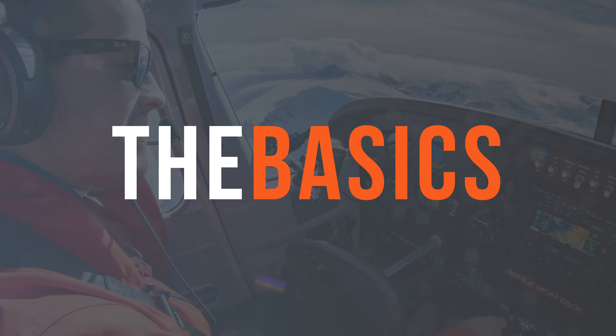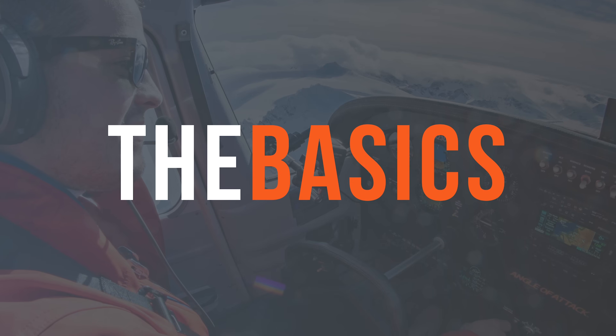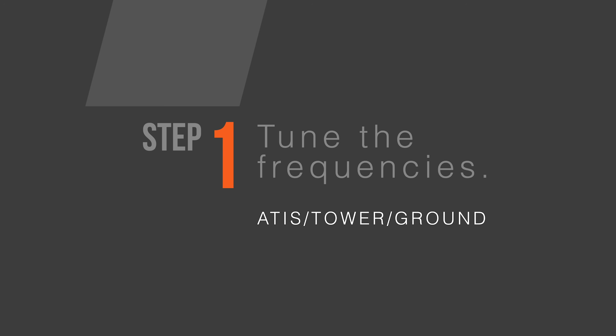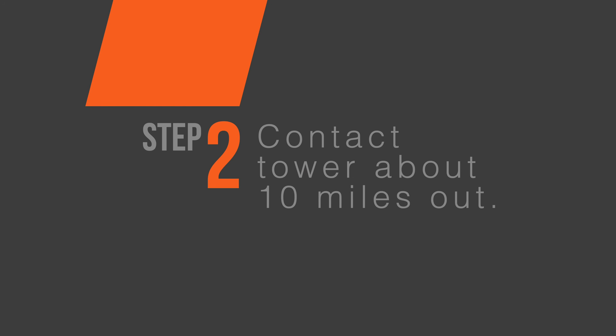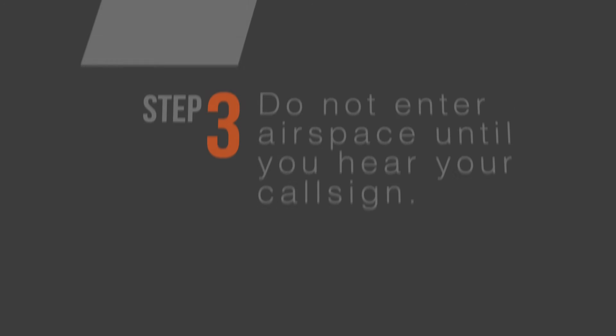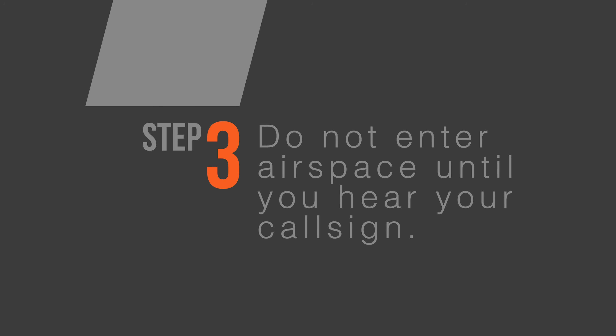First, I'm going to very quickly go over the basic steps we'll follow when flying into Class D airspace with ATC. First, you want to tune the frequencies you're going to use — that being the ATIS, the tower, and maybe even ground. You'll want to listen for and get the ATIS because you'll need to repeat back that information, and it'll tell you things you need to know, like what runway to use. You'll want to contact ATC or the Class D tower about 10 miles out. To enter that airspace, you need to hear your call sign or tail number — you need to hear that before you're allowed to enter. When you hear that, that is basically your clearance to enter the airspace.